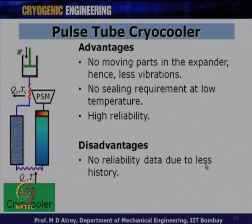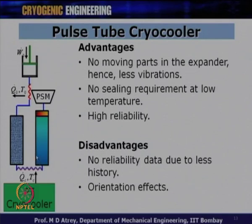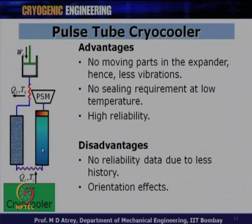The disadvantages are: there is no reliability data due to less history — no failure data over a period of time to conclude this cooler will never fail. Also, the pulse tube cooler is sensitive to orientation effects. Because it is gravity-driven with convective currents — hot end on top, cold end at the bottom — inclining the cooler at some angle produces a different cooling effect. Pulse tube coolers normally operate in vertical mode only.